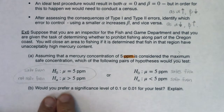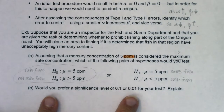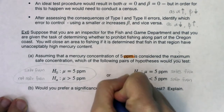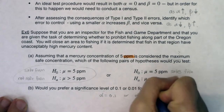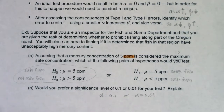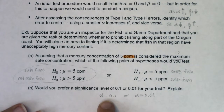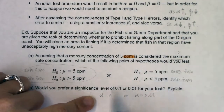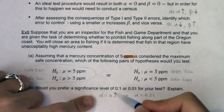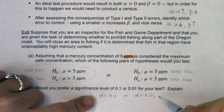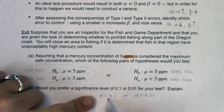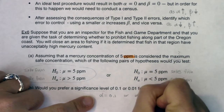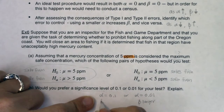Would you prefer a significance level of 0.1 or 0.01? When you hear significance level, that's alpha. So do I want alpha to be 0.1 or 0.01? As it went from 0.1 to 0.01, alpha went down — from 10% to 1%. As alpha went down, beta went up. So beta is larger when alpha is 0.01, and beta is smaller when alpha is 0.1.